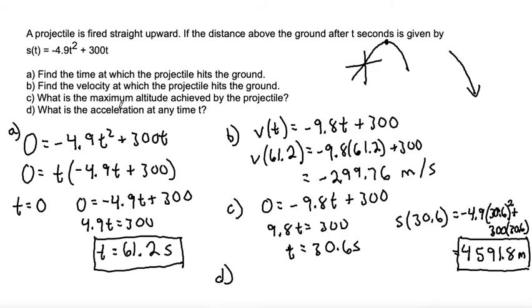And for part D, the acceleration is the derivative of the velocity. So the idea is that when you have the distance function, you take the first derivative, it gives you velocity, and if you take the second derivative, it gives you acceleration.